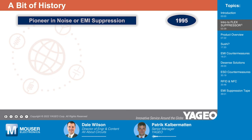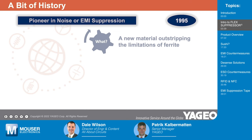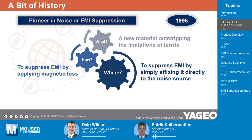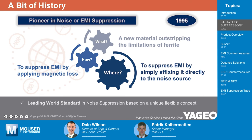Some customers came to us asking, can't you propose something different, something new, where we can get rid of this EMI problem? So the idea was to find a new material that would go over the limitations of ferrite — ferrite is heavy, ferrite is brittle — trying to find something new that would still enable us to suppress EMI using magnetic loss properties, by suppressing EMI by simply putting it where you have the noise problem. And with that, our engineers created the flex suppressor. Thus, we became the world leader in noise suppression based on this new concept.